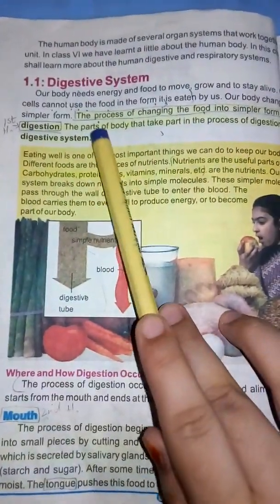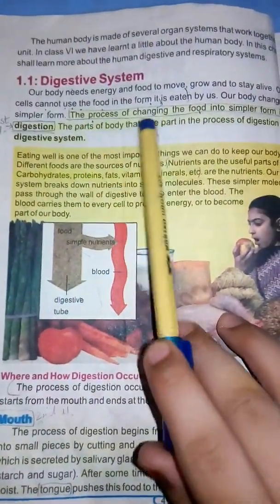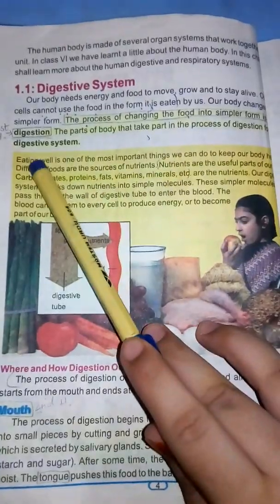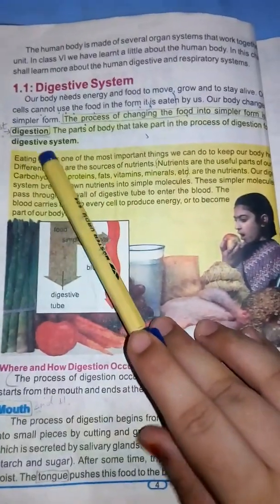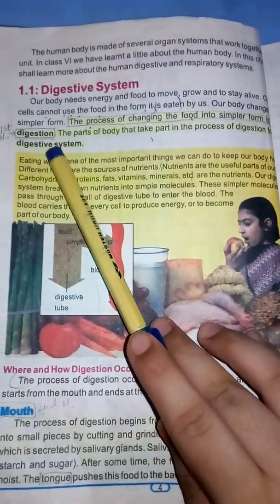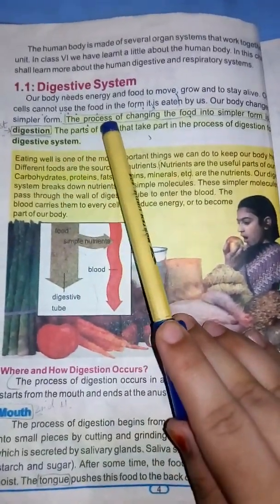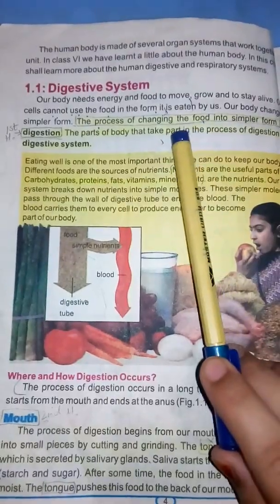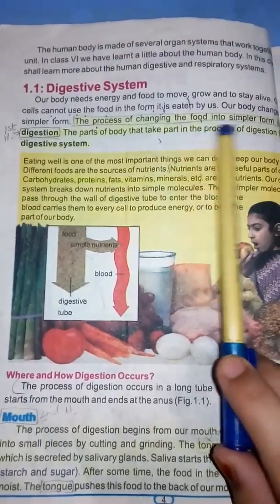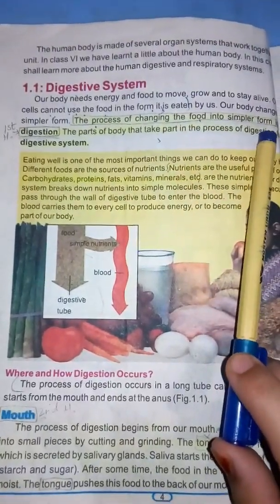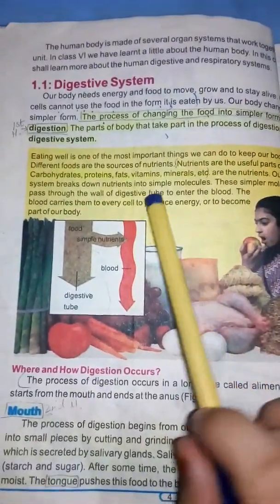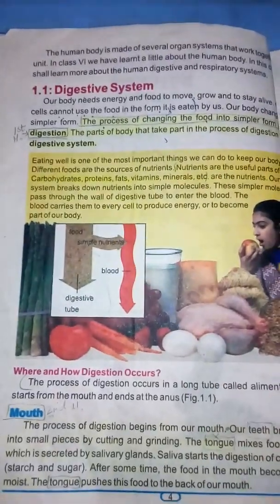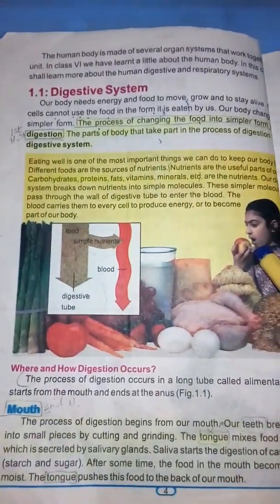The definition is highlighted here, students: the process of changing food into simpler form is called digestion. It is a process of conversion of food into its simplest form, and these simplest forms are called nutrients.